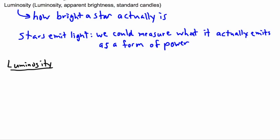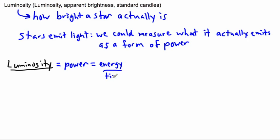There is a problem with measuring luminosity directly, because you'd have to actually go up to the star and measure it. So we're going to talk about that effect and the effect of distance. But for right now, what luminosity is actually defined as — we actually have a definition for it — luminosity is some sort of power.